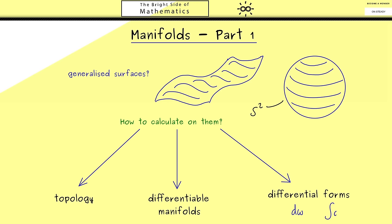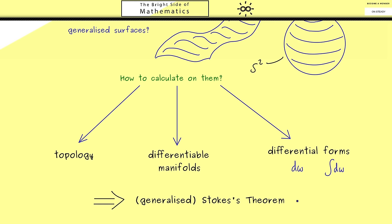And indeed, in the end, also integrals with these differential forms will make sense. Okay, now the overall goal I have in mind for this course here is that we will reach the generalized Stokes's theorem. Indeed, this theorem will nicely form a connection between a manifold and its boundary by using differential forms. So this is the overview of the course, and I think we are ready to start with the first part and talk about topology.